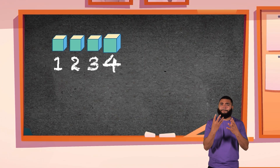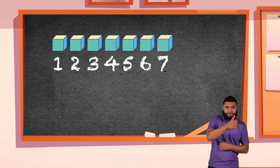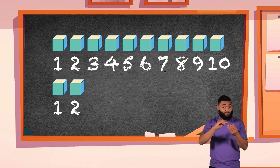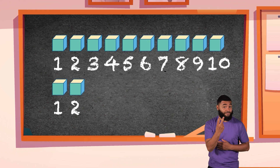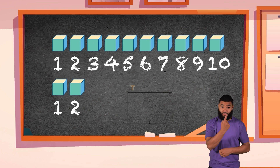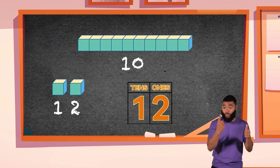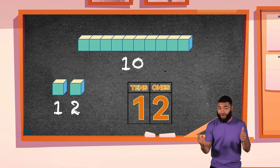Last one! Can you figure out how many 10s and ones the number 12 has? That's right — one group of 10 plus two ones.